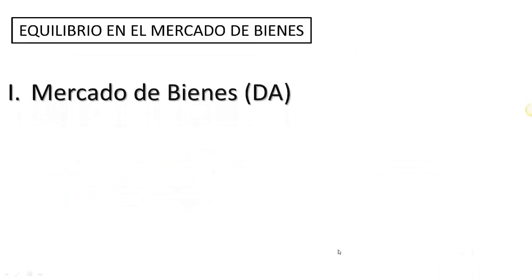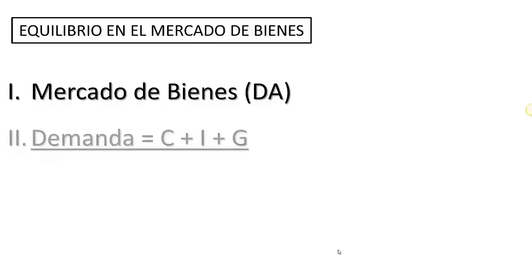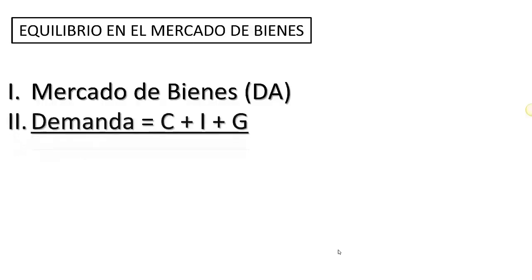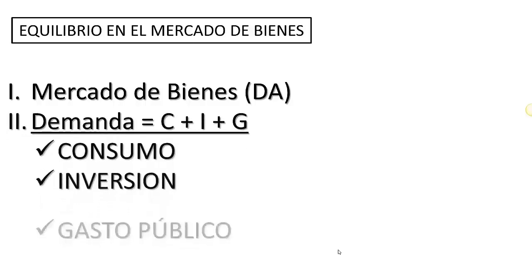La demanda de bienes de una economía, la demanda agregada, está conformada por el gasto deseado y planeado de las familias, las empresas y el gobierno. La demanda agregada tiene tres componentes: el consumo, la inversión y el gasto público.